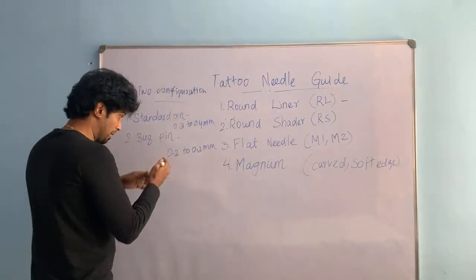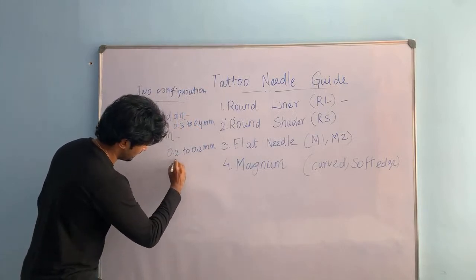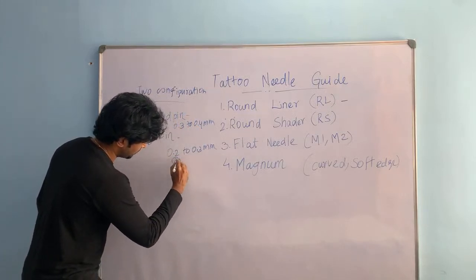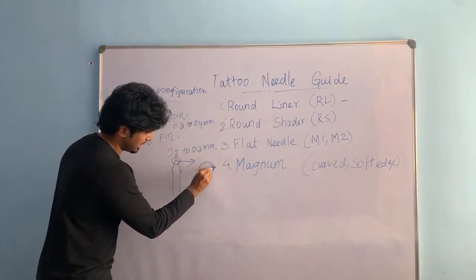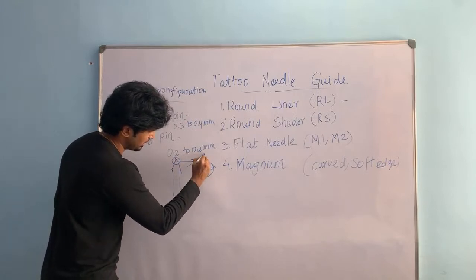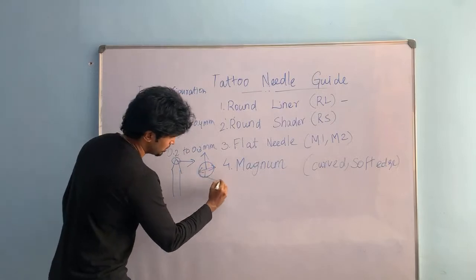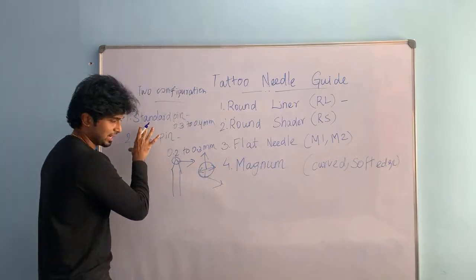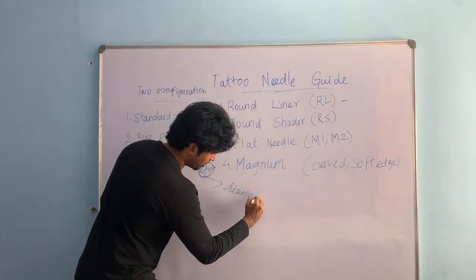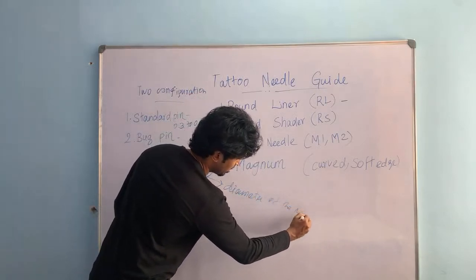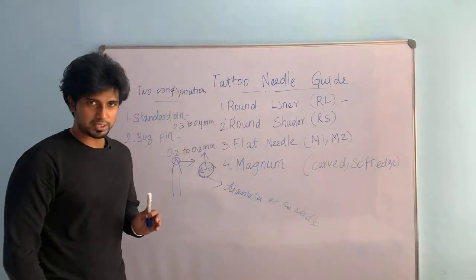To clarify what I mean by the millimeter measurement — if you look at the front portion of a needle, it's round, and this measurement refers to the diameter of that needle. So buck pin and standard pin are measured by the diameter of the needle.